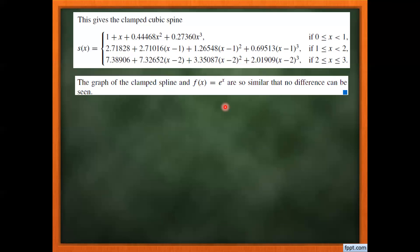When we plot the clamped spline interpolant against the exponential curve over the interval 0 to 3, they match so perfectly that no difference can be observed — that's why no separate graph is shown, as they are 100% identical.